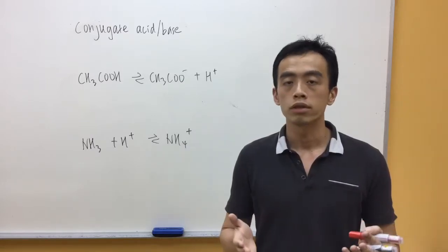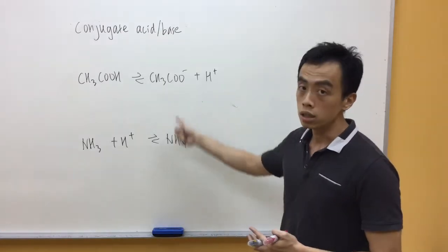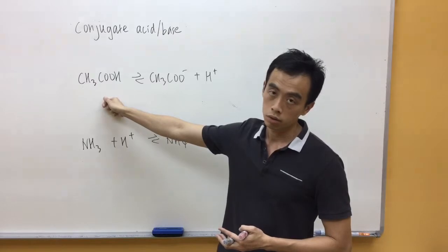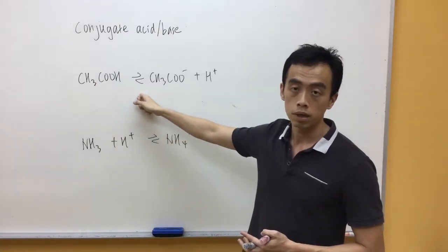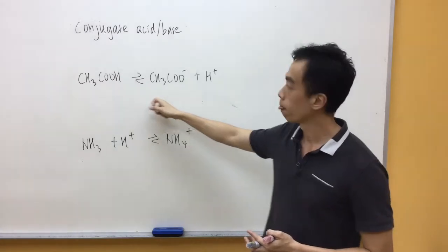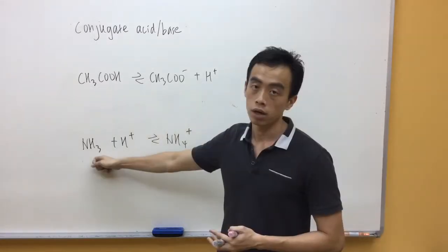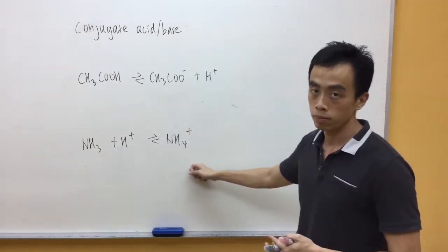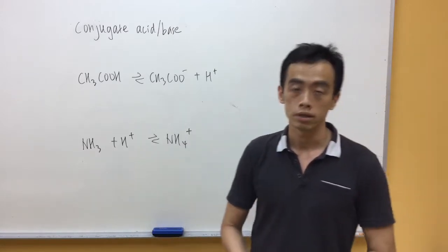To start the discussion, we need to consider weak acids and weak bases, as represented by these two equations here. This is an example of a weak acid, CH3COOH, partially dissociated, which is represented by a reversible sign, to give us CH3COO- and an H+. Now, we have our ammonia, which is an example of a weak base, accepting an H+ to form NH4+. Again, this reversible sign represents that it is a weak base, partial dissociation.